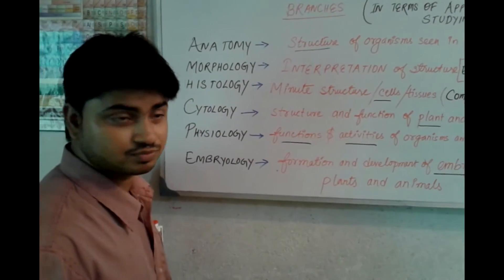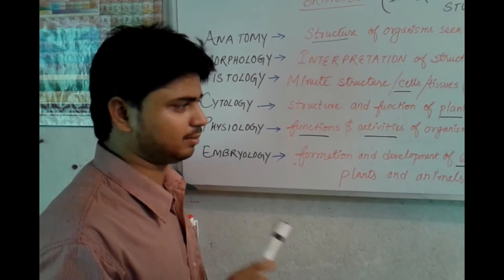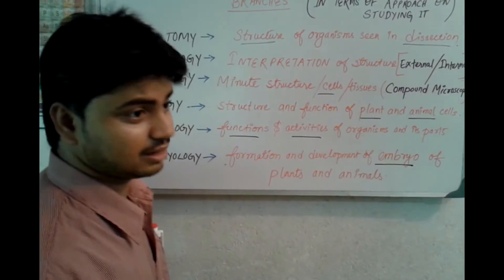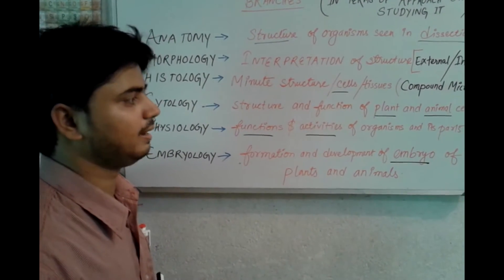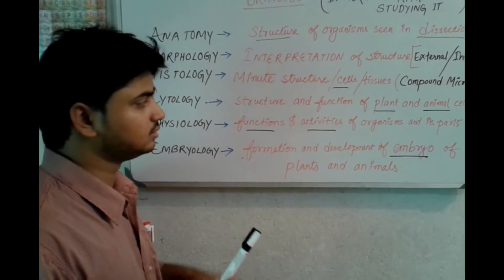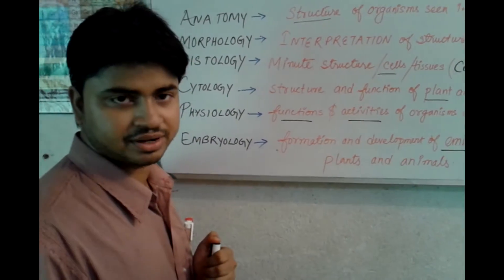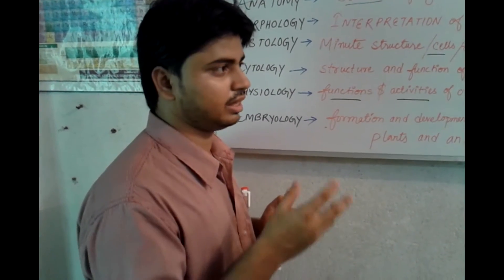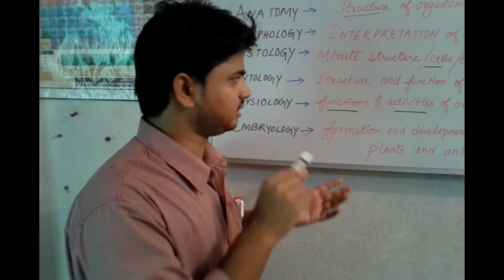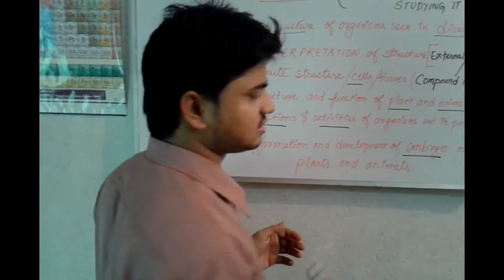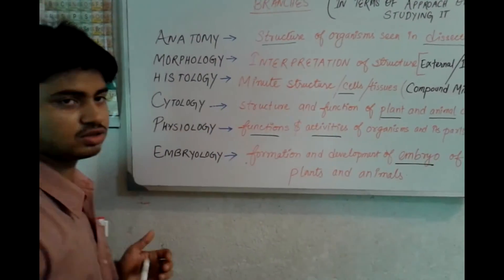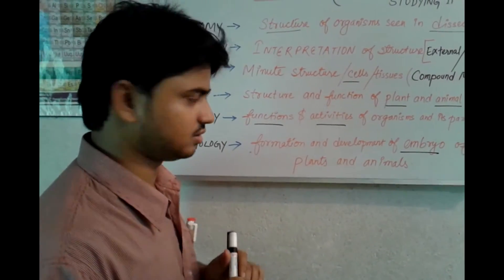Next is cytology — the study of the structure and function of plant and animal cells. In the laboratory we deal with the structure and function of animal and plant cells. For example, an animal cell has a cell membrane, cytoplasm, nuclear membrane, endoplasmic reticulum, and Golgi bodies. Note that vacuoles are present in plant cells but not in animal cells. Reading about the structure and function of cells is cytology.